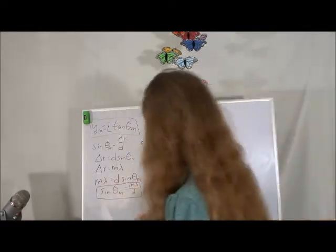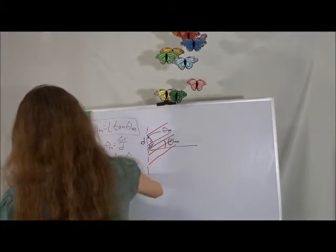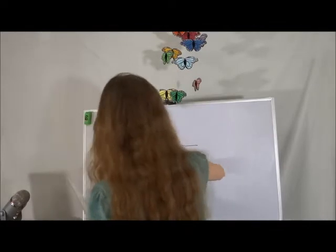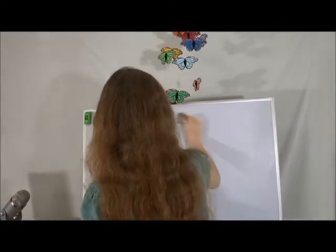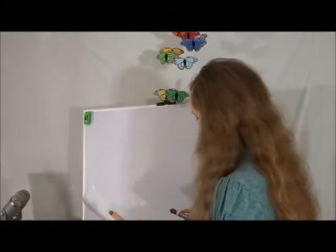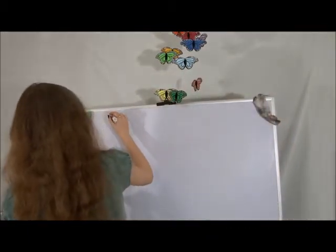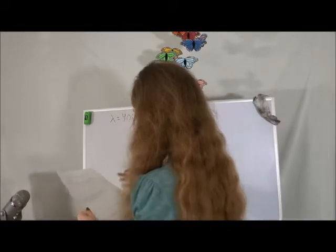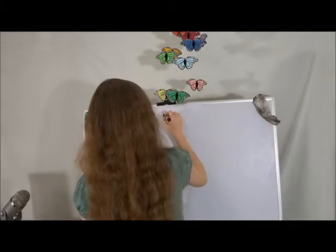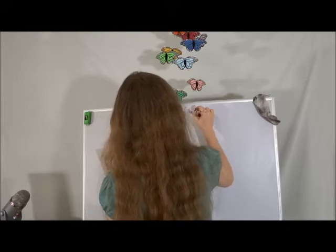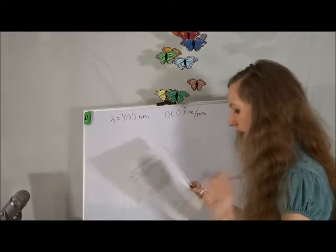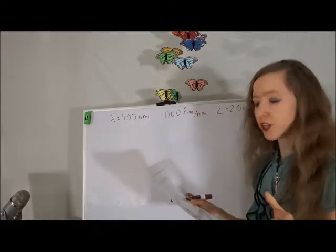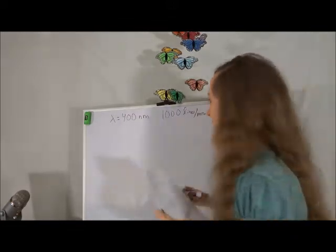Let's hop into an example. Suppose we have a red laser with wavelength 400 nanometers, shining through a diffraction grating with 1000 lines per millimeter, projected onto a screen that's 2 meters away from the diffraction grating, so L equals 2 meters. Part A: what is the location of the m equals 2 bright fringe?